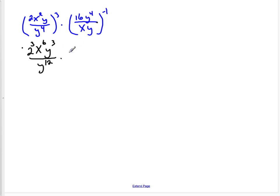I'm going to do the same thing in here to get 16 to the negative 1, y to the negative 4, all over x to the negative 1 y to the negative 1. So I brought that exponent to every one of the terms. Now I'm just going to simplify some things, move around some negative exponents and see what I get.